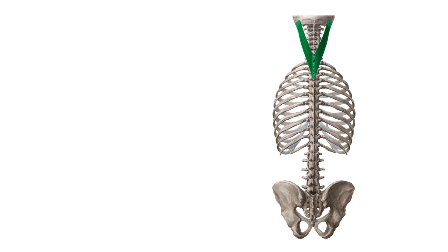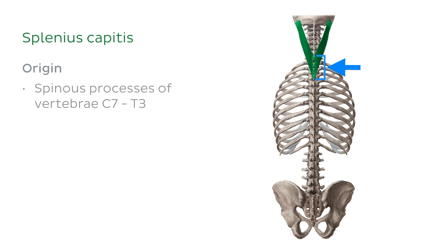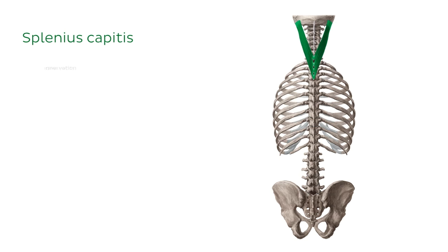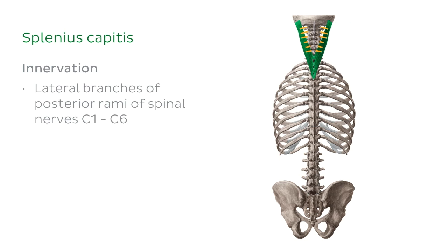We're going to begin by looking at the splenius capitis. The splenius capitis muscle has its origin on the spinous processes of the C7 to T3 vertebrae, as well as the nuchal ligament. It inserts on the lateral part of the superior nuchal line, which is found on the occipital bone, and the mastoid process, which is found on the temporal bone. It receives innervation from the lateral branches of the posterior rami of the spinal nerves C1 to C6.